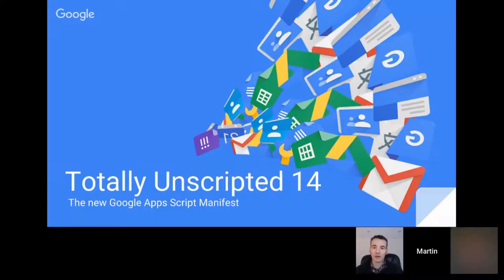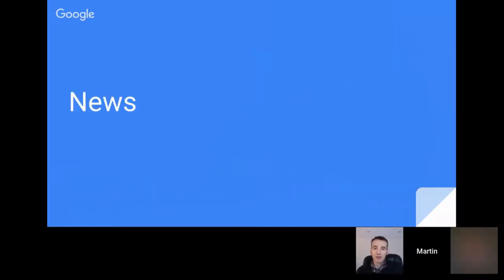Welcome to this episode of Totally Unscripted. Today we've got some bits and pieces to look at. We'll start with some news and updates and then for this show we're going to look at the new Google Apps Script manifest files, which is a way that you can control your project.